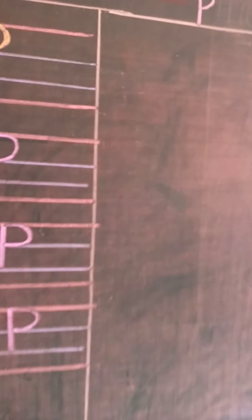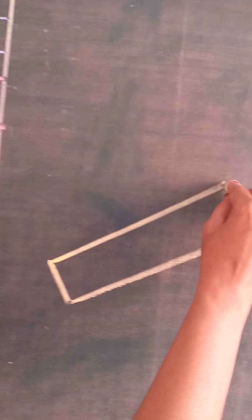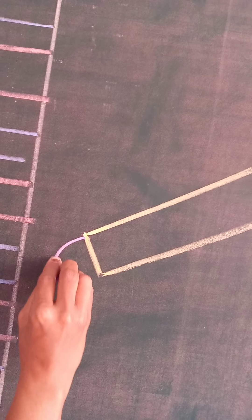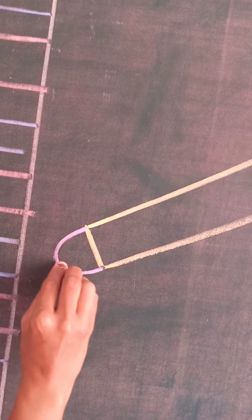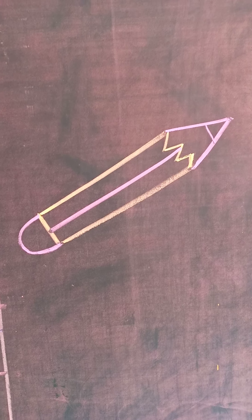Now we will draw the picture of P. For the picture of P, my dear students, we've got pencil. Draw a slanting line like this, again draw a slanting line leaving some gap, and join it with a sleeping line. Draw curves and zigzag like this. Now we will draw the tip of the pencil — draw a slanting line and join these lines. Draw a curve at the back like this and draw a slanting line. This is P for pencil.